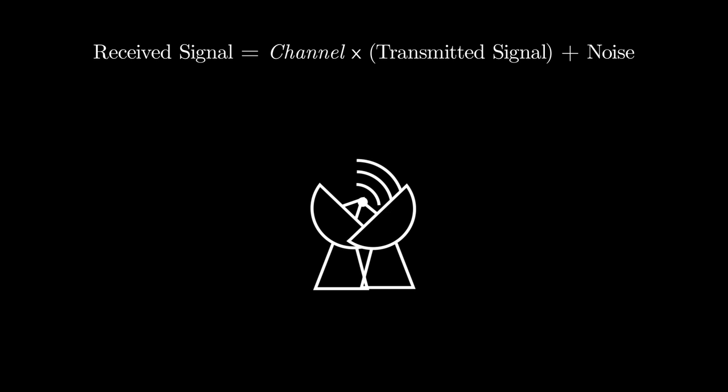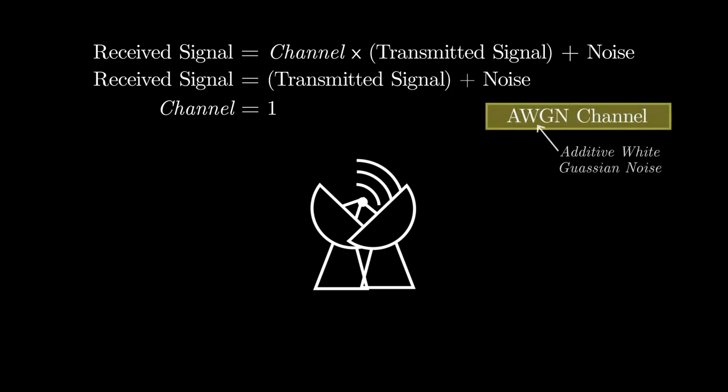In this ideal scenario, the receiver receives the same power as the transmitter sends, along with some noise. That is, channel is one in this scenario. This type of channel is called an AWGN channel.